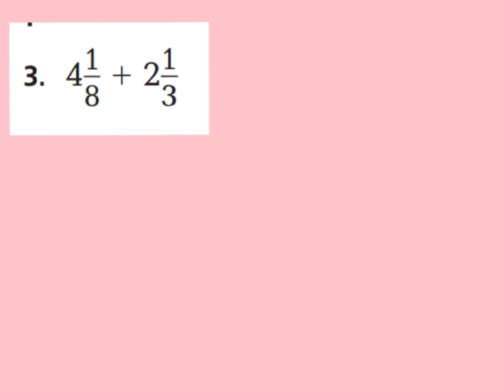Okay boys and girls, let's go ahead and rewrite question 3 right below it. And we're going to write it as 4 and 1 eighth plus 2 and 1 third. Now let's take a look at our denominators. I see this denominator is 8 and this denominator is 3. Our goal is to have common denominators, which means they have to be alike.